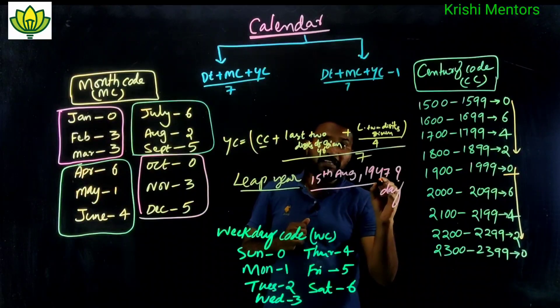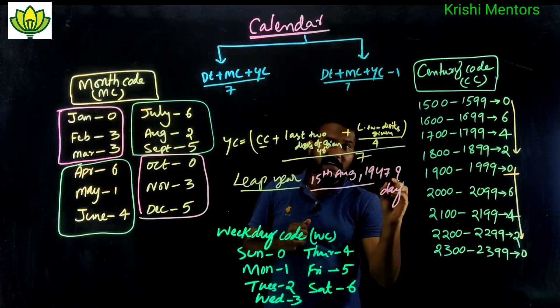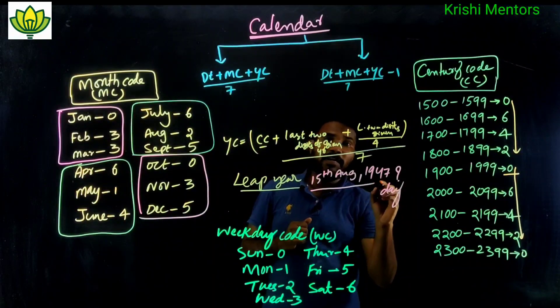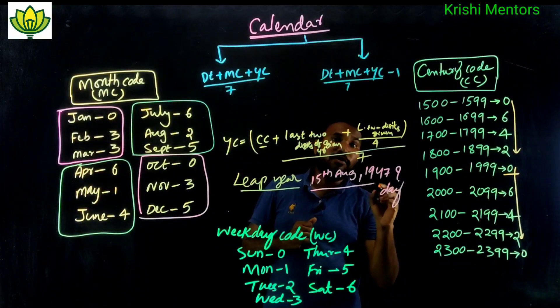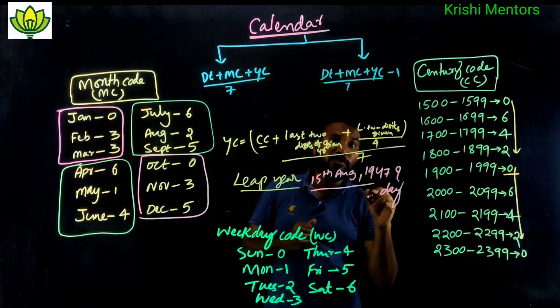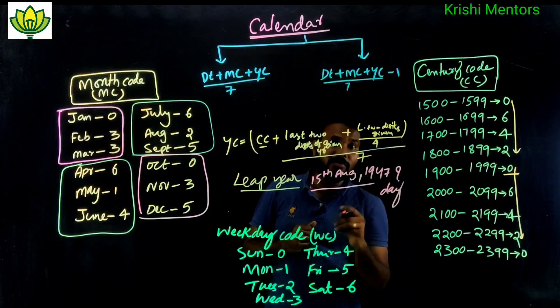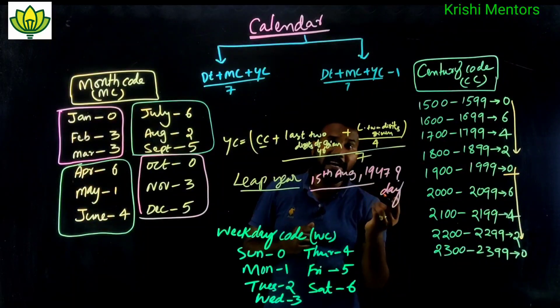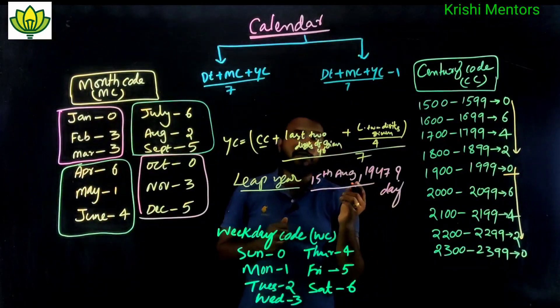For a leap year check, take the last two digits of the year and divide by 4.